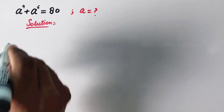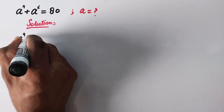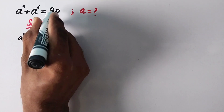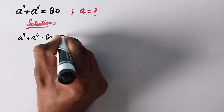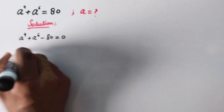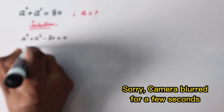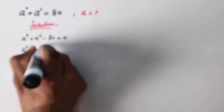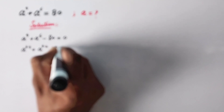In the first step we will write A raised to the power 9 plus A raised to the power 6 minus 80 is equal to 0. Or we can write A raised to the power 3 times 3 plus A raised to the power 3 times 2 minus 80 is equal to 0.